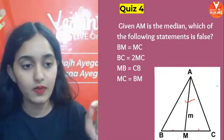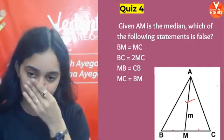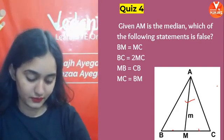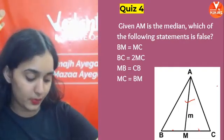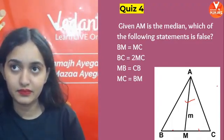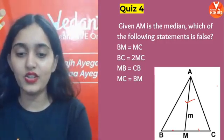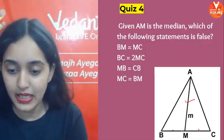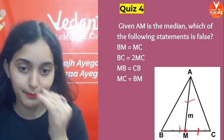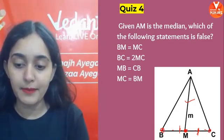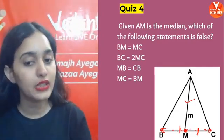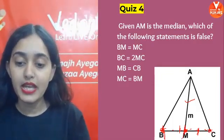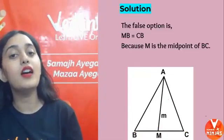Time's up. The correct answer is option C. BM equals MC is true because M is the midpoint. BC equals twice MC is true because BC is made of BM and MC, and both are equal. But MD equals CB is false — MB is only a part of CB, so it cannot be equal to the whole of CB. That is why option C is the false statement.